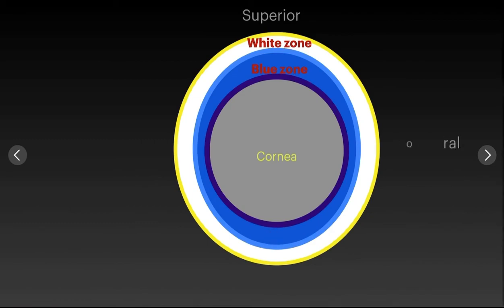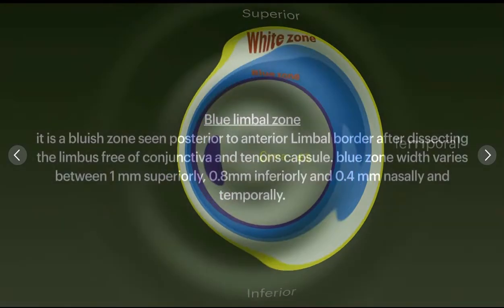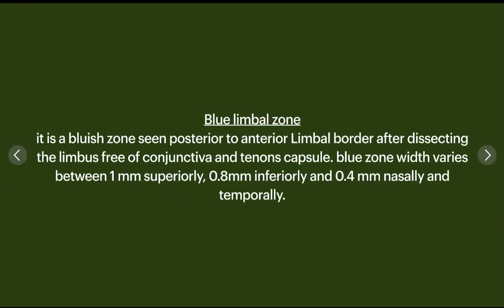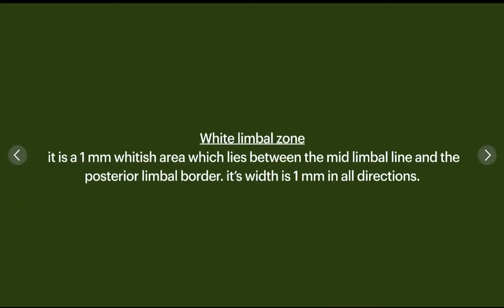The blue limbal zone lies between the anterior and mid limbal borders and is usually only visible after dissecting the limbus free of conjunctiva and Tenon's capsule, as seen in the video. The white limbal zone is posterior to the mid limbal line.